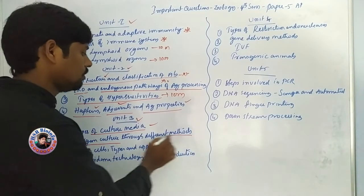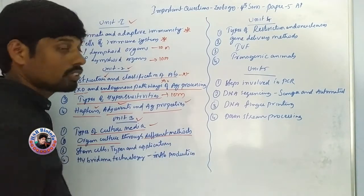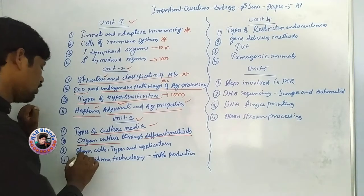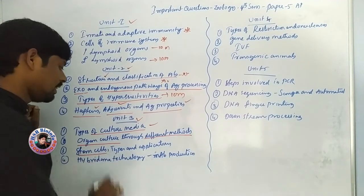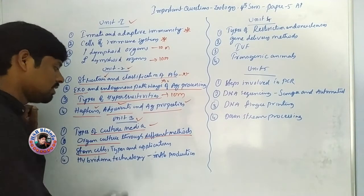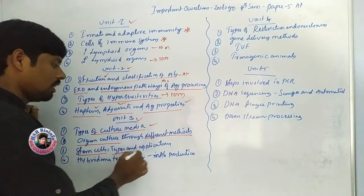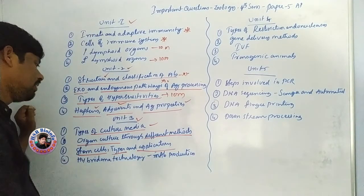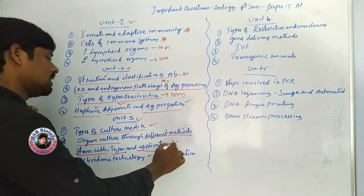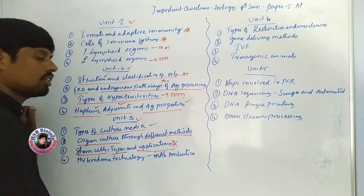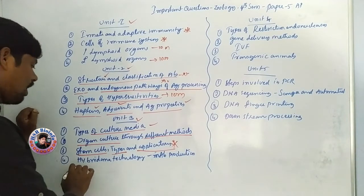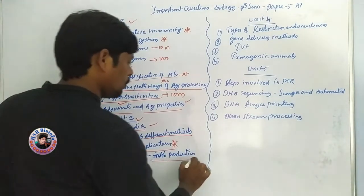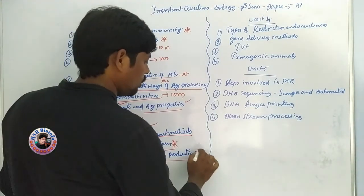Different methods of organ culture. Stem cells — applications — very very very important question. Hybridoma technology, monoclonal antibody production — very very very important.